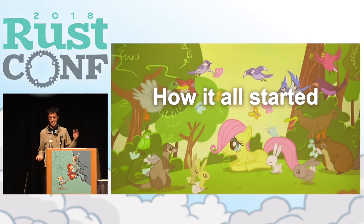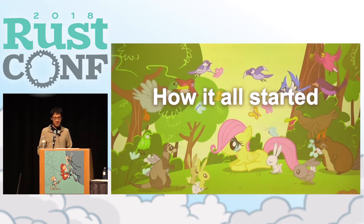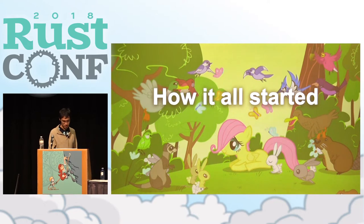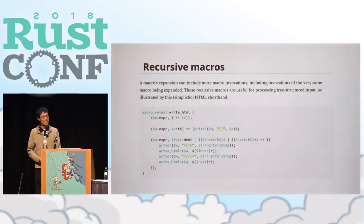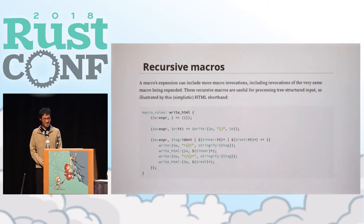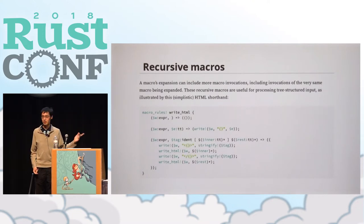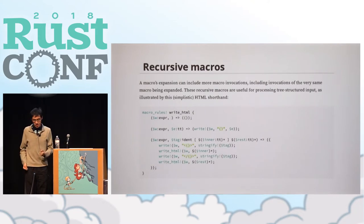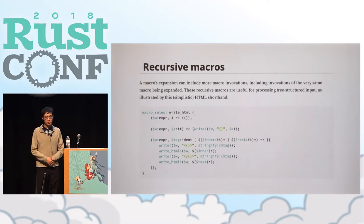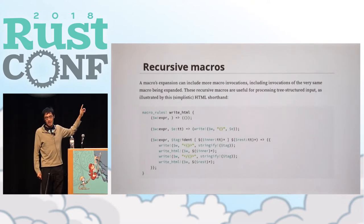Now I've hopefully convinced you all that Maud is amazing and you should all use it — but how did I come up with this idea? Well, it started like many things by reading the official documentation. This is an excerpt from the old Rust book — it has since been rewritten — and one of the sections in that book is about macros, with an example of a macro that generates HTML.